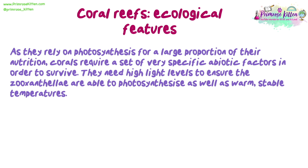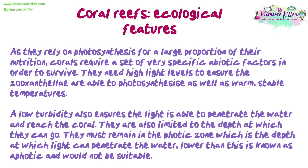As they rely on photosynthesis for a large proportion of their nutrition, corals require a set of very specific abiotic factors in order to survive. They need high light levels to ensure the zooxanthellae are able to photosynthesise, as well as warm, stable temperatures. A low turbidity also ensures the light is able to penetrate the water and reach the coral. They are also limited to the depth at which they can go — they must remain in the photic zone, which is the depth at which light can penetrate the water. Lower than this is known as the aphotic zone and would not be suitable.